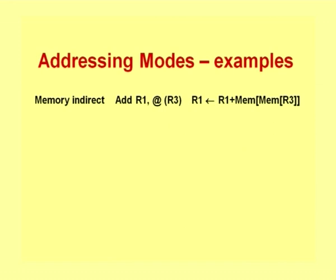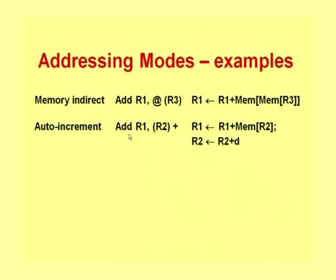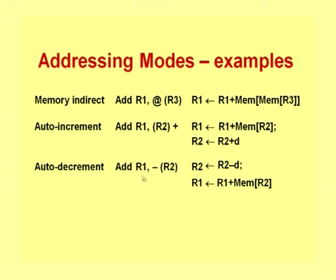Just take a look at a few examples and see if you are able to recollect how these addressing modes work. We have the memory indirect addressing: add R1, at R3 — the at symbol indicates memory indirect addressing. The contents of R3 give a memory address, and the data at that memory location is added to R1 and stored in R1. We have the auto increment instruction: add R1, R2+. R1 takes the value of R1 plus the memory value specified by R2, and then R2 is incremented by D. Auto decrement similarly: add R1, −R2. You first do R2 = R2 − D and then use the address in R2.